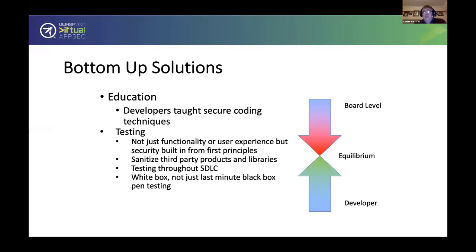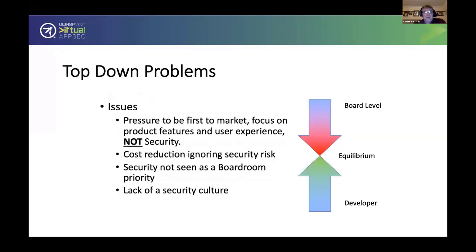We've heard about things like introducing threat modeling into programs, sanitizing third-party products and libraries, and testing throughout the software development lifecycle — white box testing, not just black box pen testing at the end. We also have top-down problems from a board and management perspective: pressure to be first to market, focusing on product features rather than security, cost reduction, ignoring security risks, security not being seen as a boardroom priority, and the lack of an organizational security culture.